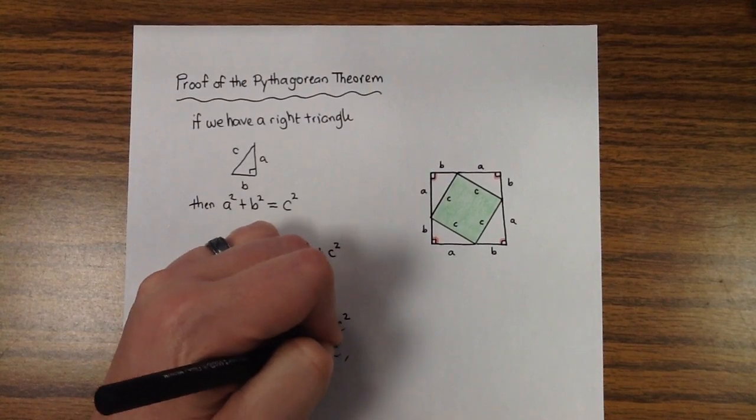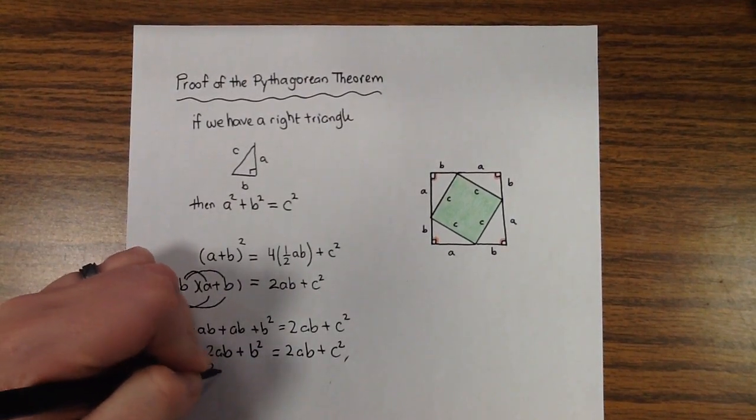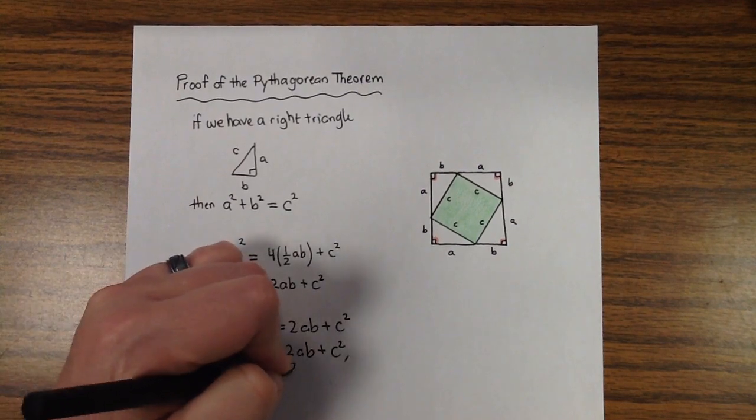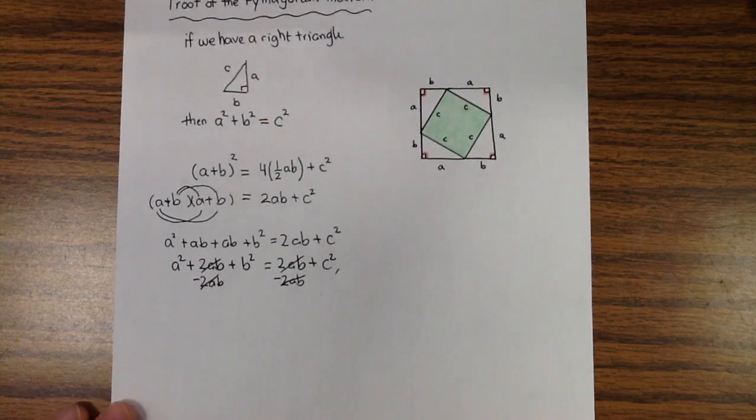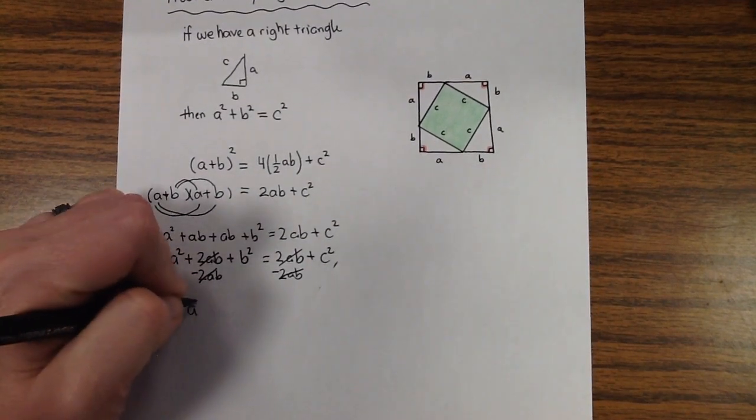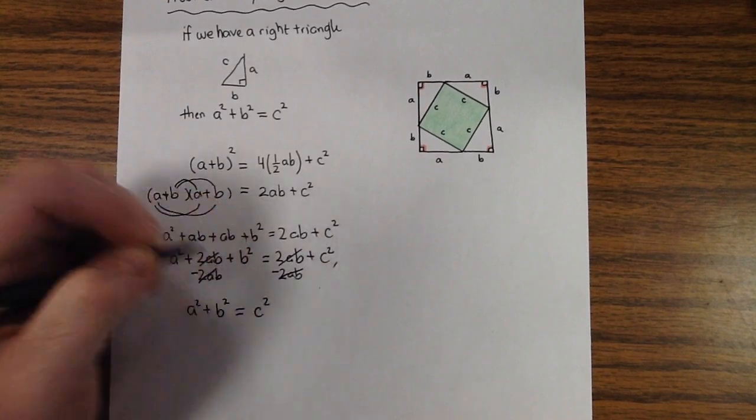And on both sides of the equation, I have a common term. I have 2AB on both sides. So using the subtraction property of equality, we can subtract that off. And look at what we're left with. A squared plus B squared must equal C squared.